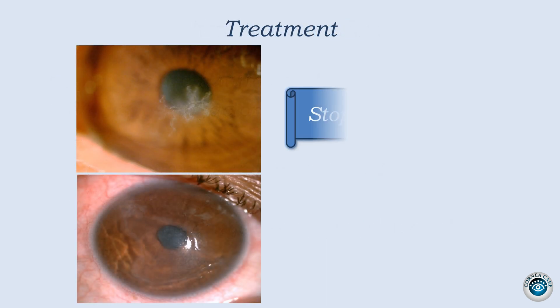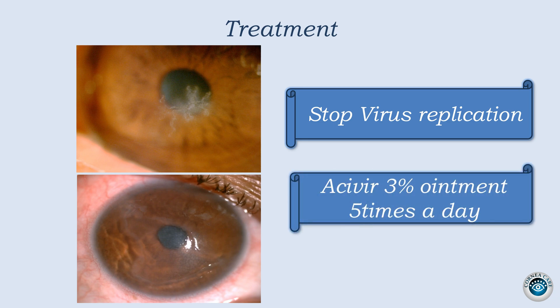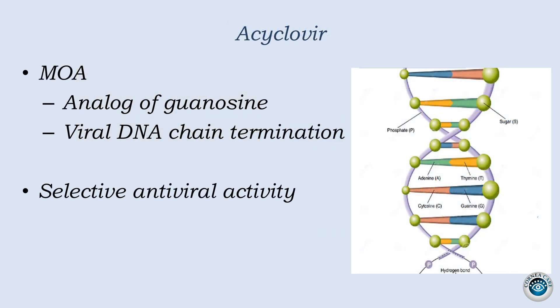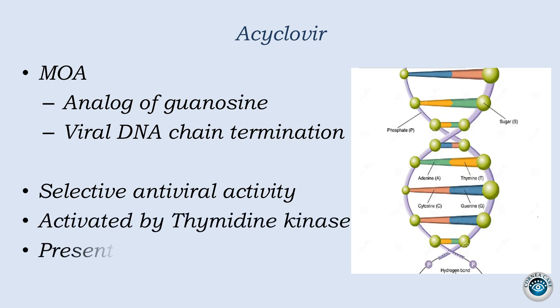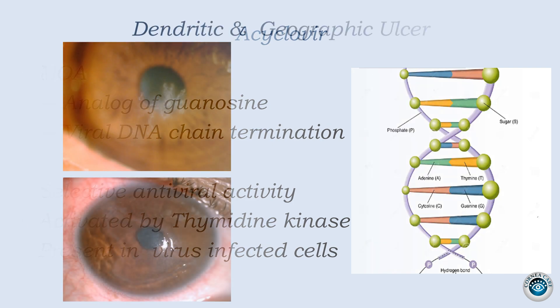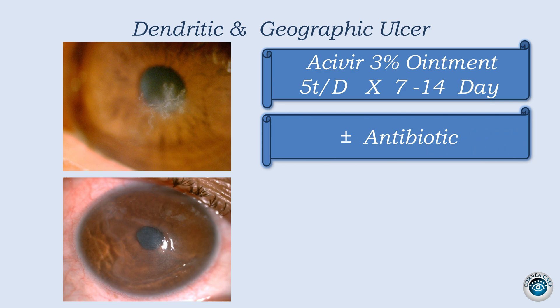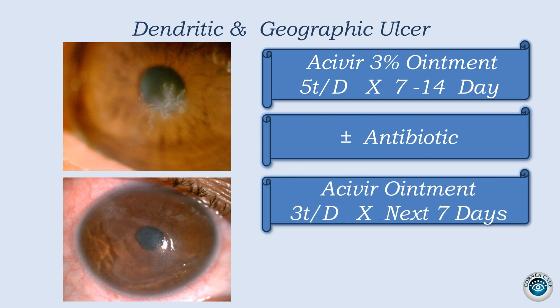Treatment means stopping viral replication. Usually we start with acyclovir ointment in a 5-times-a-day dose. The beauty of acyclovir is that it selectively stops viral replication without affecting DNA replication in normal cells, because it's mostly activated inside virus-infected cells. That's why it's very safe and effective. As a result, most dendrites heal in 7 days, and geographic ulcers may take 10 to 14 days. We may add topical antibiotics to prevent superinfection. Once the ulcer heals, acyclovir is given for one additional week to kill any residual virus.